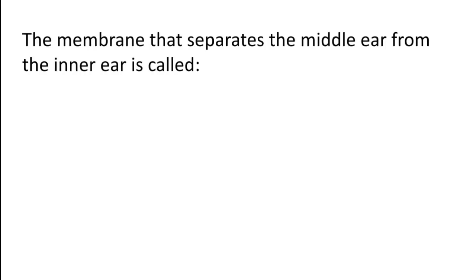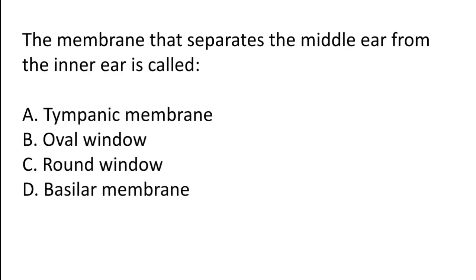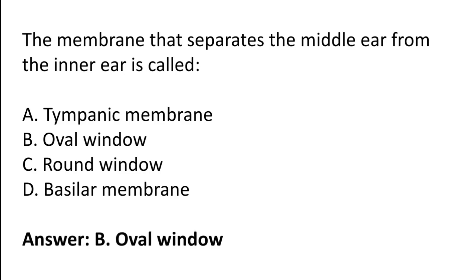The membrane that separates the middle ear from the inner ear is called: Tympanic membrane, oval window, round window, basilar membrane. The correct answer is option B — the membrane that separates the middle ear from the inner ear is called the oval window.